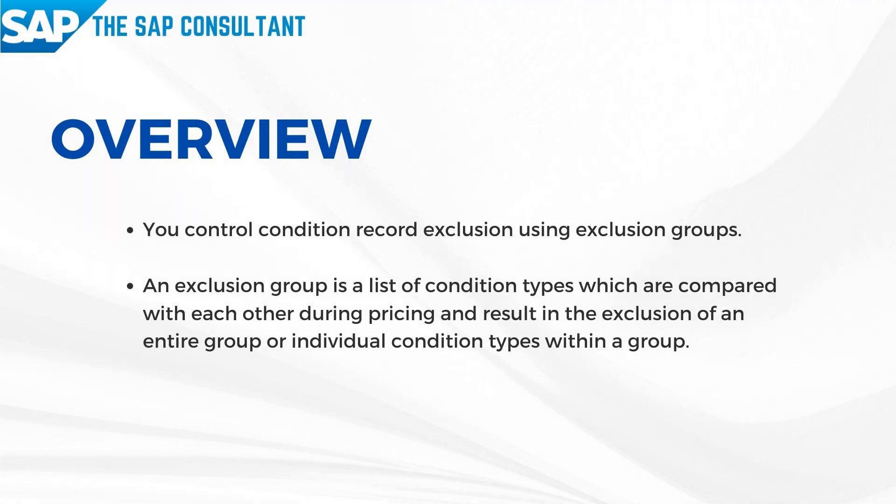Using the condition exclusion functionality, we can control activation of the condition types by setting up an exclusion approach as per the business need. An exclusion group is a list of condition types which are compared with each other during pricing, and results in the exclusion of an entire group or individual condition types within a group.